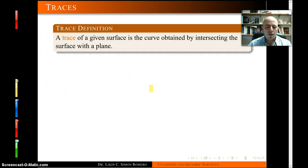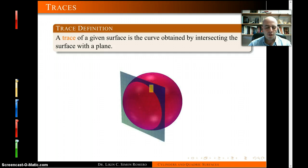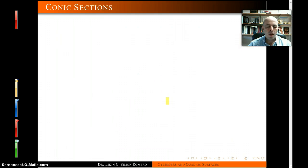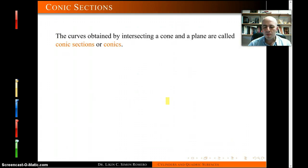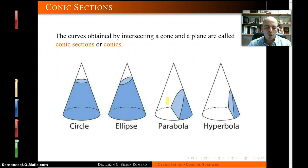Traces: a trace of a given surface is a curve obtained by intersecting the surface with a plane. For example, the trace corresponding to a plane intersecting this sphere is going to be a circle. Conic sections are curves obtained by intersecting a cone with a plane. This is just a quick review — you're supposed to know this already. We'll consider circles and ellipses to be the same, along with parabolas and hyperbolas.